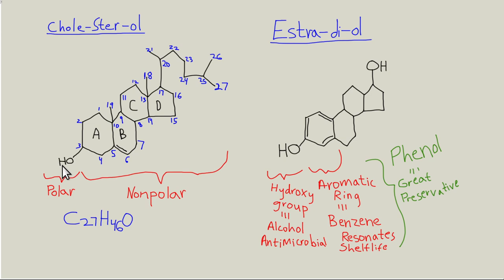Cholesterol is the backbone structure for the estrogenic hormones in the human body. Here is estradiol — 'estra' meaning female, 'di' meaning two, 'ol' meaning two hydroxyl groups. The hydroxyl group is attached to a benzene ring, a cyclohexane with three double bonds whose electrons can move through all six carbons via pi orbitals — giving tremendous shelf stability. This is why these chemicals are in everything: they're worth billions of dollars, and companies will just make a new variation if you ban any one of them.